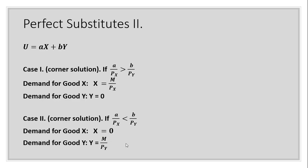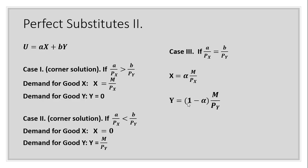Another possible corner solution: if the marginal utility per dollar of good y is greater than for good x, the consumer will not buy any good x — demand for good x equals zero — and demand for good y equals income divided by the price of good y. A third possibility is when marginal utility per dollar of good x equals that of good y. In this case, the demand for good x equals alpha times income divided by the price of good x, and the demand for good y equals one minus alpha times income divided by the price of good y, where alpha is a value between zero and one.